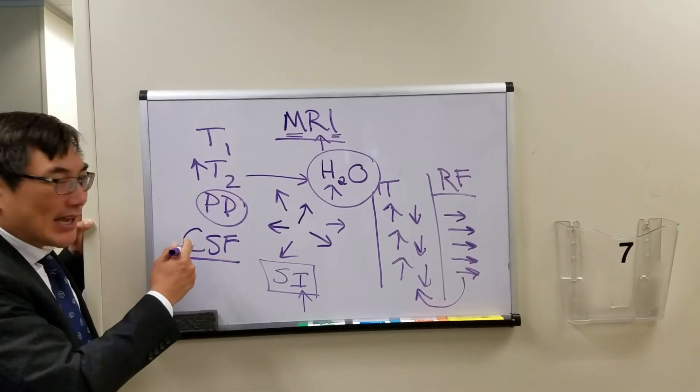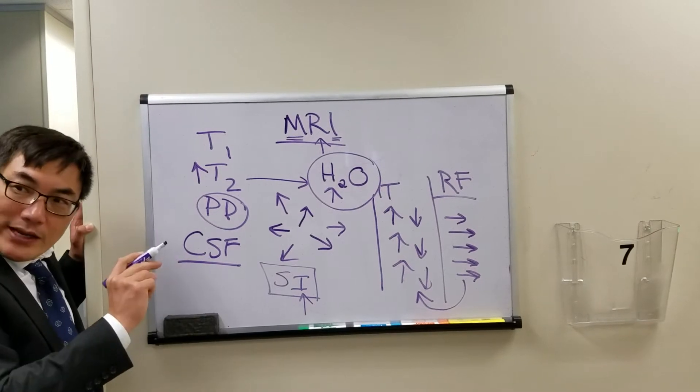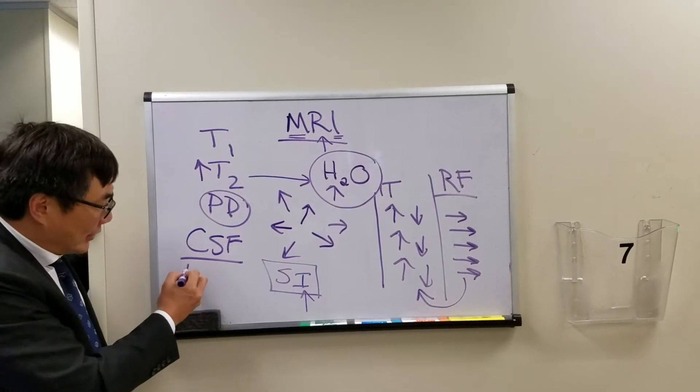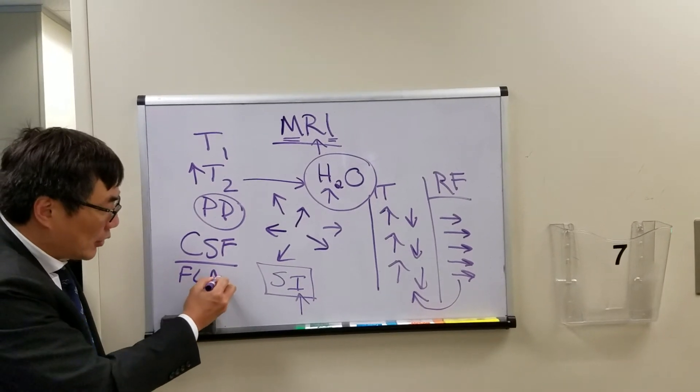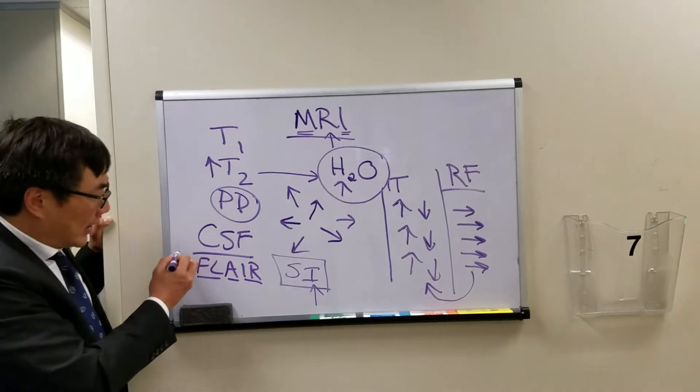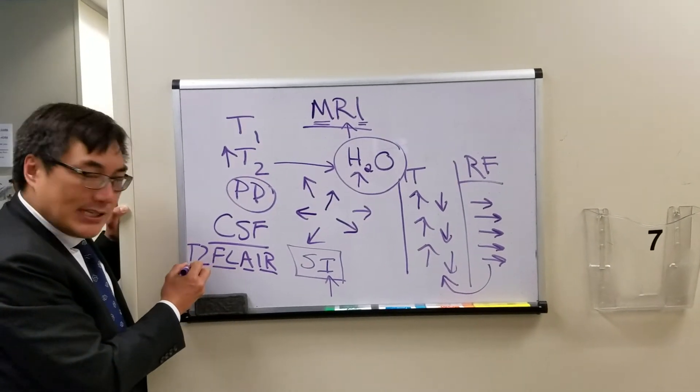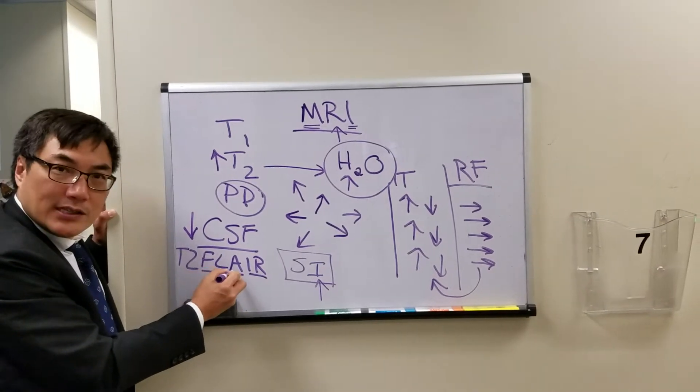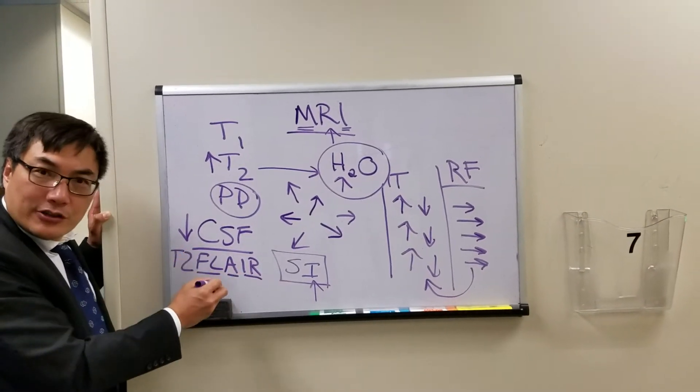So we would like to have a sequence that can attenuate or reduce the fluid signal, and we can do that using an inversion recovery sequence. So when we use inversion recovery to attenuate the fluid, in this case the cerebral spinal fluid, we call that FLAIR. So the T2 CSF signal can be attenuated using fluid attenuation inversion recovery, also known as FLAIR.